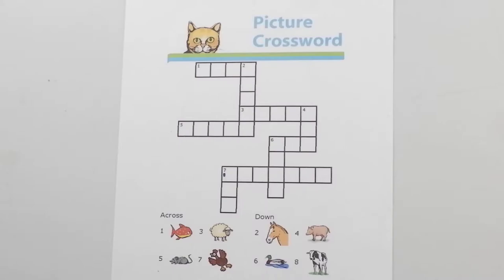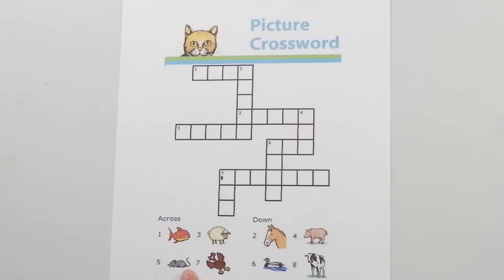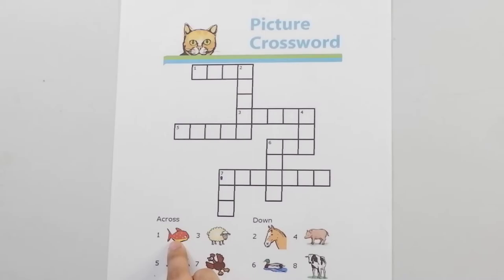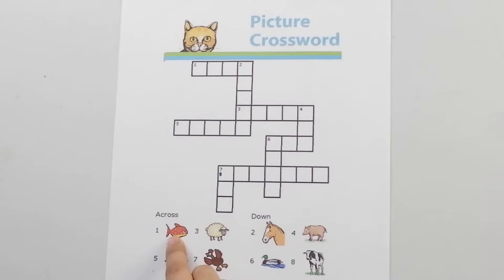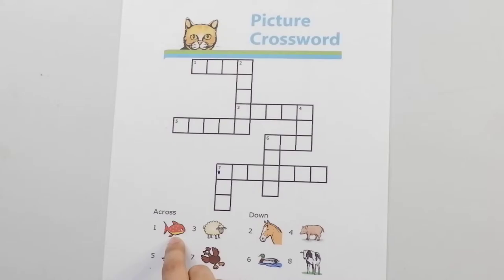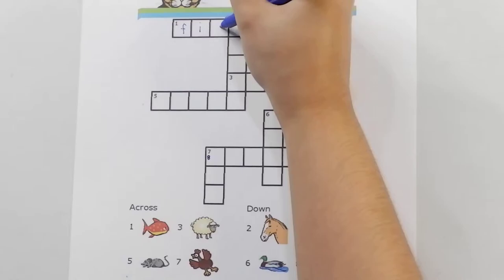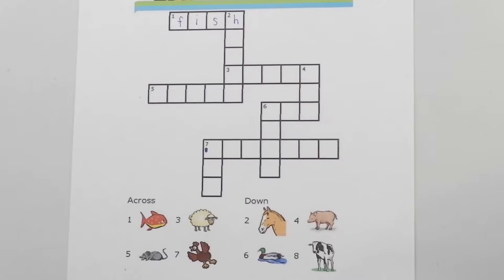We will also see numbers in some of the boxes that match with its clue. Number one is under across. This means the answer for number one should be written horizontally. Let's start writing the word fish on box number one. Just the right number of boxes to spell the word fish.